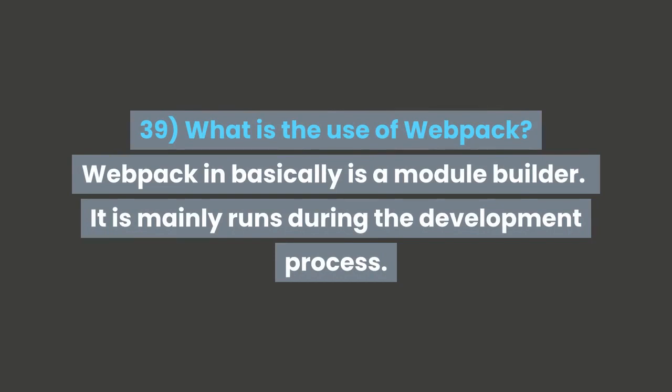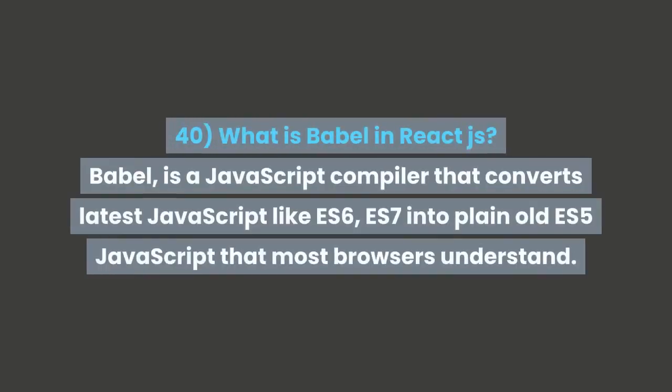Question 39: What is the use of webpack? Webpack is basically a module builder. It mainly runs during the development process. Question 40: What is Babel in React? Babel is a JavaScript compiler that converts latest JavaScript like ES6 and ES7 into plain old ES5 JavaScript that most browsers understand.